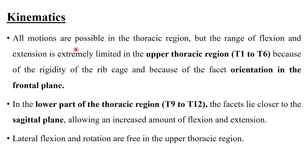Coming to the kinematics, all motions are possible in the thoracic region, but the range of flexion and extension is extremely limited in the upper thoracic region (T1 to T6) because of the rigidity of the rib cage and the facet orientation in the frontal plane. In the lower thoracic region (T9 to T12), the facets are slightly closer to the sagittal plane, allowing an increased amount of flexion and extension.